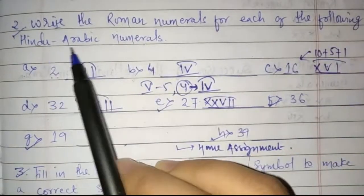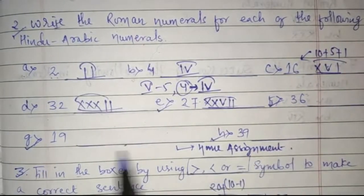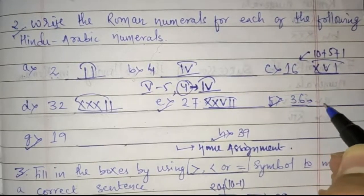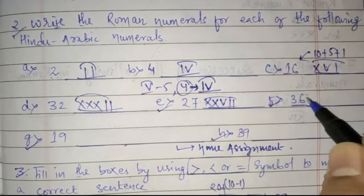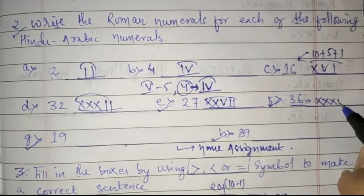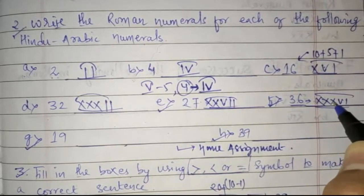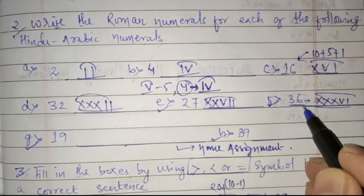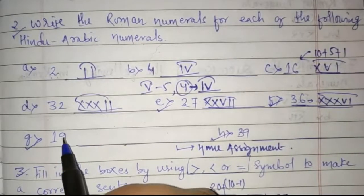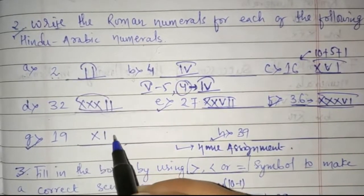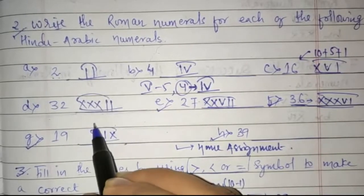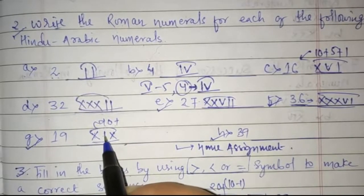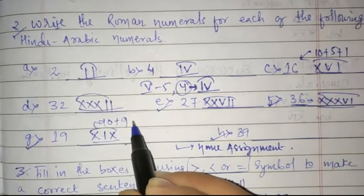Write the Roman numerals for each of the following Hindu-Arabic numerals. So, F, G, H were homework — you have to write these in Roman numeral form. So 36 is written as 30 then 6: XXX then VI, which gives XXXVI for 36. And 19 is X then IX, because X means 10 and IX means 9, so it is 19.